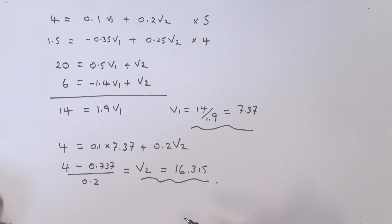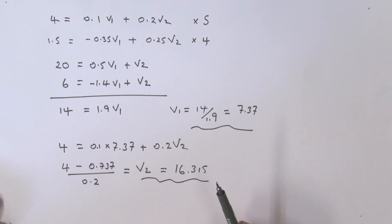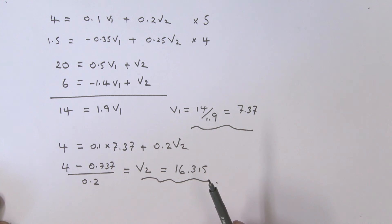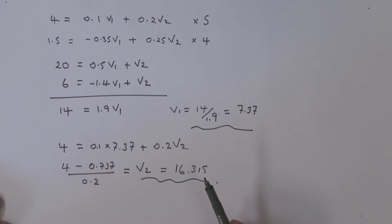So this is how we deal with this problem. We used a supernode, but we also needed a voltage loop in order to fully solve it. Have a think about this, go through it yourself, and I'll see you next time.